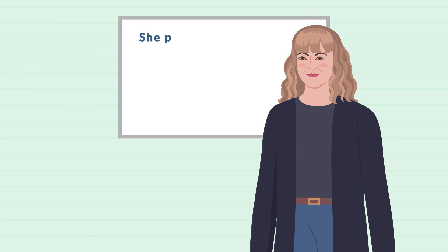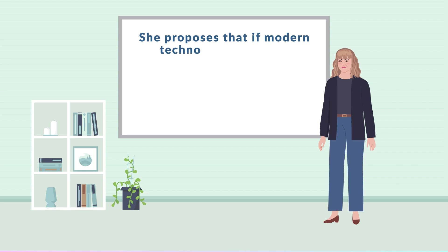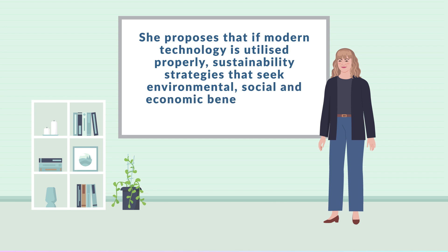Overall, Olga suggests that technology can act both as an enabler and an interference when trying to achieve sustainability goals. She proposes that if modern technology is utilized properly, sustainability strategies that seek environmental, social and economic benefits may be improved over time.